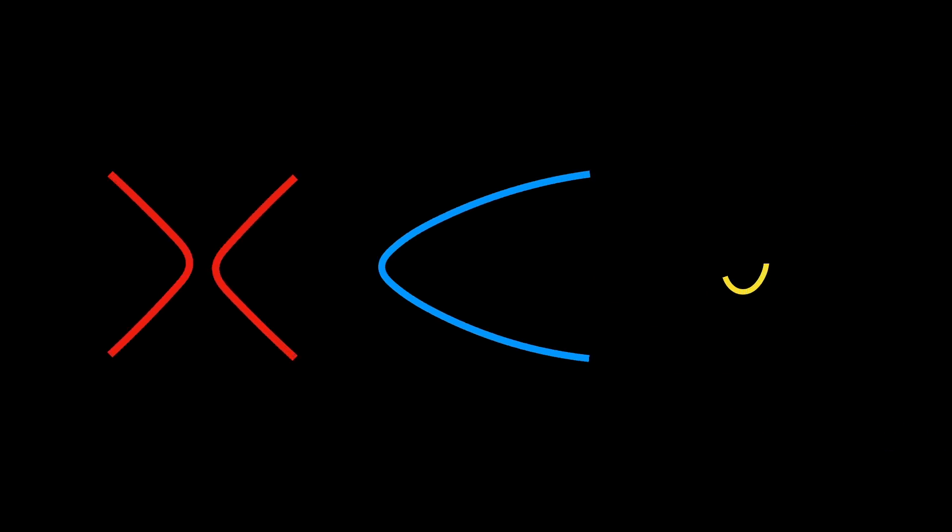Open-ended or even infinitely extending curves like parabolas, hyperbolas, and cubic curves still have a local structure similar to a line, making them 1D manifolds as well.